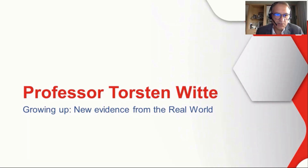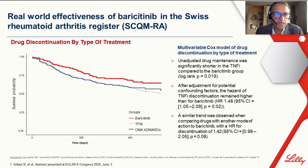The last presentation was by Professor Torsten Witte from Germany, who discussed growing evidence from the real world. He showed discontinuation rates for TNF inhibitors, baricitinib in red, and biologics with other modes of action. Unadjusted drug maintenance was significantly shorter for TNF inhibitors compared to baricitinib, and after adjustment for potential confounding factors, the hazard of TNF inhibitor discontinuation remained higher than for baricitinib. This data comes from the Swiss registry.